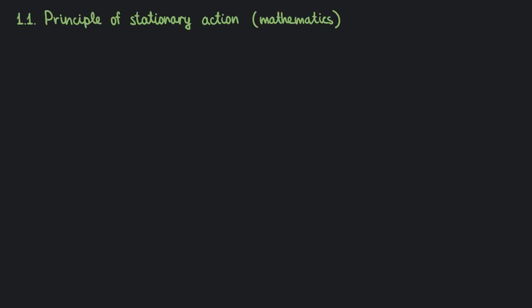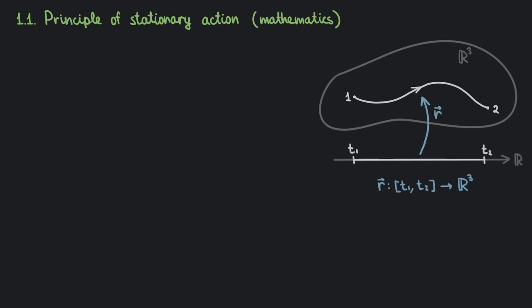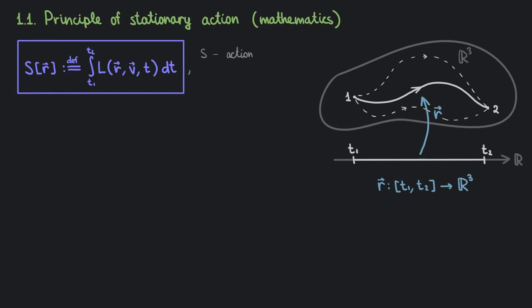Let's start with the principle of stationary action. We will formulate it for the case of a point particle moving in R³ first. We have a particle that moves between two fixed points along some path R, and by path we mean just a smooth map from R to R³. Some forces might act on a particle or not — we are trying to consider the most general case. Since we don't know the forces, we don't know the exact path the particle is traveling. First, we define the following integral, called the action. We integrate along a path R, and L, the Lagrangian, is a smooth function of coordinates, velocities, and time. It characterizes our mechanical system. For a given Lagrangian, it takes a path in R³ as input and gives some real number as output.